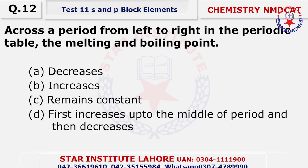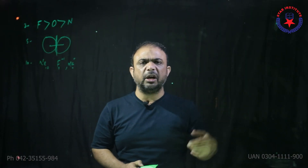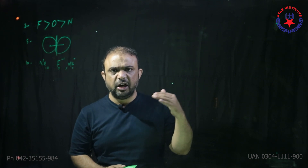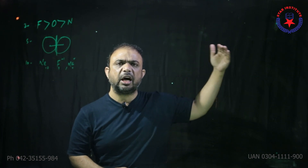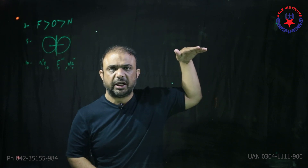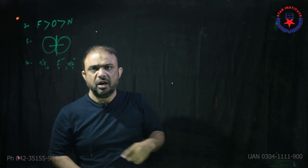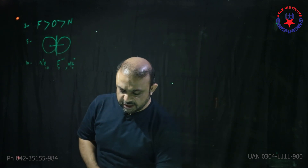Question number 12: Across a period from left to right in the periodic table, the melting and boiling point first increases up to carbon — lithium to beryllium melting point increases, beryllium to boron increases, boron to carbon increases — up to group 4 it increases, and then suddenly decreases as we reach the gases. So it first increases, then decreases. Choice D.